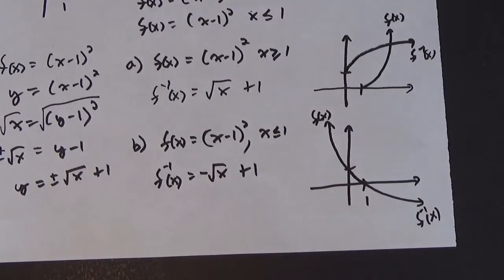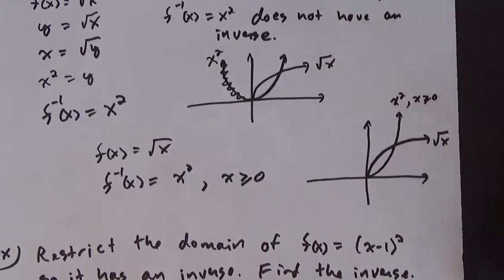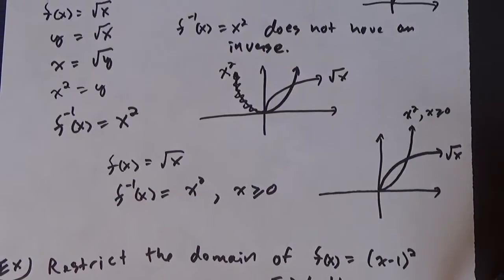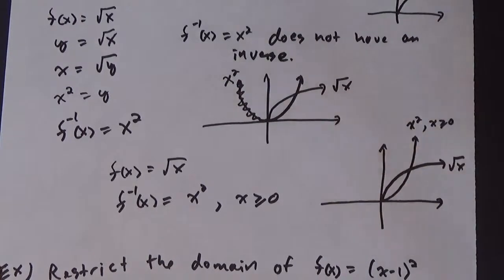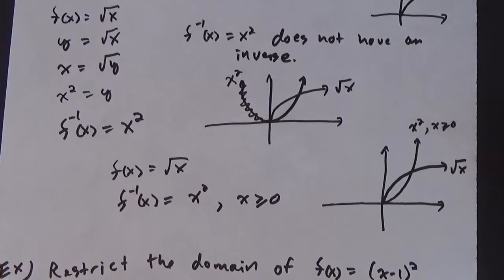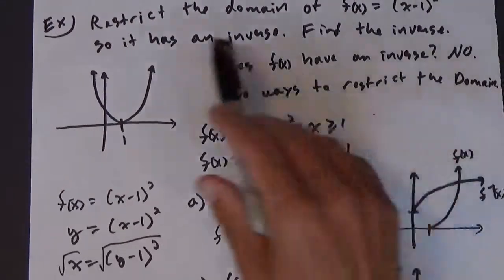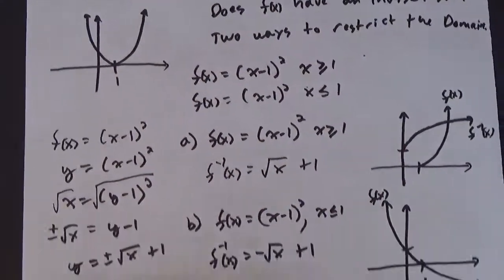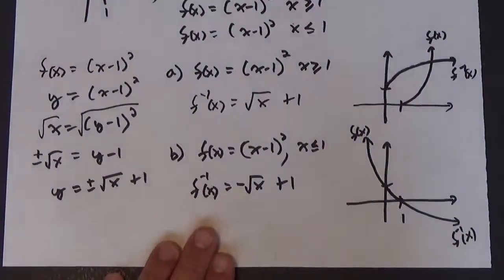In this video, we looked at the domain issue, which comes up quite often when working with inverses of functions. Many functions simply don't have an inverse, so when we want one, we have to restrict the domain. Here we saw an example of how restricting the domain allows us to obtain a valid inverse.